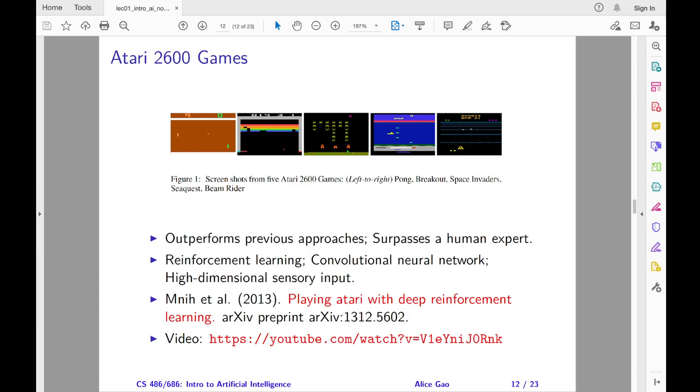The main contribution of this paper was learning a complex value function by training a convolutional neural network. In prior work, the value function was created by using handcrafted features, and this was infeasible for the high-dimensional video input in Atari games. Instead, the program used a convolutional neural network to represent the value function. The convolutional neural network automatically extracted high-level features from the video input and used them to determine the value.